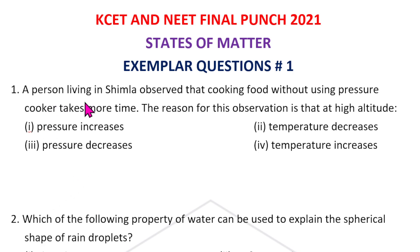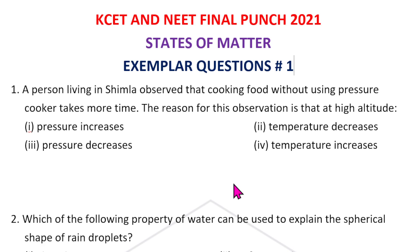Question 1: A person living in Shimla observed that cooking food without using a pressure cooker takes more time. The reason is that at high altitude, pressure is low. Hence boiling takes place at a lower temperature, and therefore cooking takes more time. The answer is: pressure decreases.